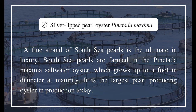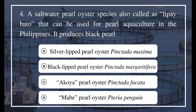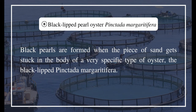Question 4: A saltwater pearl oyster species also called 'Taipei Bato' that can be used for pearl aquaculture in the Philippines — it produces black pearl. Options: a) Silver-lipped pearl oyster Pinctada maxima, b) Black-lipped pearl oyster Pinctada margaritifera, c) Akoya pearl oyster Pinctada fucata, d) Mabe pearl oyster Pteria penguin. The answer is B, black-lipped pearl oyster Pinctada margaritifera. Black pearls are formed when a piece of sand gets stuck in the body of the black-lipped Pinctada margaritifera.